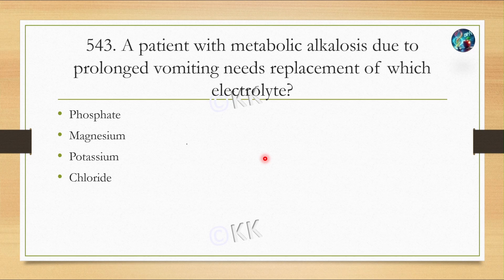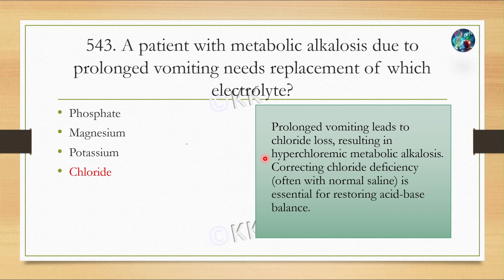Next question: a person with metabolic alkalosis due to prolonged vomiting needs replacement of which electrolyte? Option A: phosphate. Option B: magnesium. Option C: potassium. Option D: chloride. The correct answer is Option D — chloride. Prolonged vomiting leads to chloride loss, resulting in hypochloremic metabolic alkalosis. Correcting chloride deficiency is essential for restoring the acid-base balance in the body.